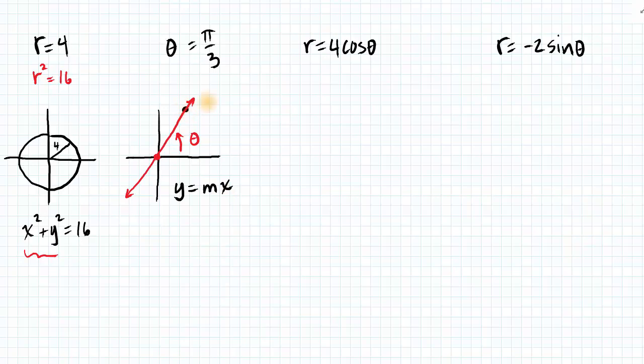And there is a point that we know very well that's on this line, and that is 1 half comma root 3 over 2. So that tells us that the slope is y over x, which is root 3.